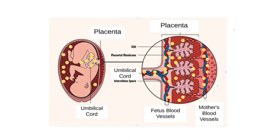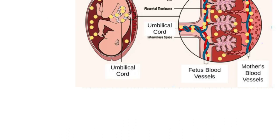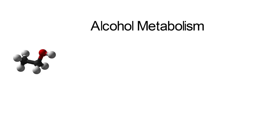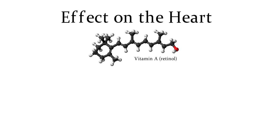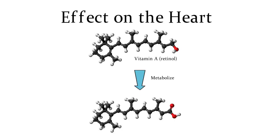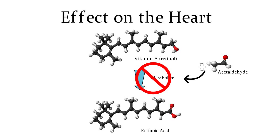There are several ways by which alcohol can harm the fetus. I'm going to discuss its effects on the heart and brain. Before I get into that, it is important to understand the metabolism of alcohol. Metabolism of ethanol starts by breaking ethanol down into acetaldehyde. Presence of acetaldehyde can greatly affect the fetal heart. Acetaldehyde prevents the metabolism of vitamin A, or retinol, into retinoic acid, which is a compound that is critical to early cardiac development. Any deviation from the normal amount of retinoic acid in the mother's body can have devastating effects on the embryo's developing heart.